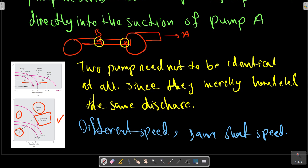The combined power is the sum of the brake horsepower for pumps A and B. For pumps in series, the combined power equals the sum of brake horsepower.